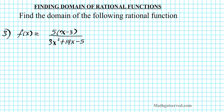To cut a long story short, if you're asked to find the domain of a rational function — a polynomial over a polynomial — you simply solve the equation where you set the denominator equal to zero and exclude the solution from your domain, and that will be the domain of your rational function.